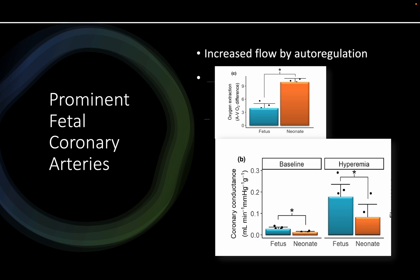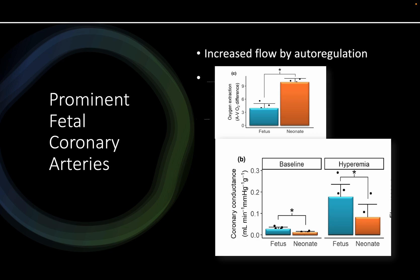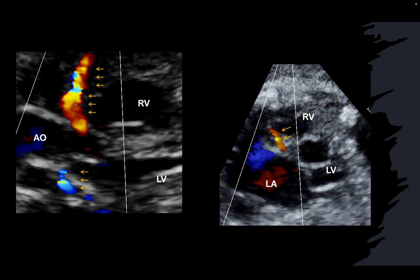Hypoxemia caused by growth retardation or placental insufficiency leads to coronary autoregulation. There are three circulations where blood distribution is altered in hypoxemia: the heart, the brain, and the adrenals — adrenals also enlarge in hypoxemia. Coronary artery flow increases because oxygen extraction is already reduced in the arterial circulation, leaving no margin for extracting more oxygen. In cases of hypoxia, such as in the fetal circulation, the only choice is to dilate the coronary arteries in response to hypoxemia.